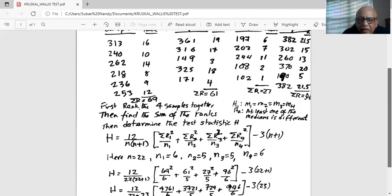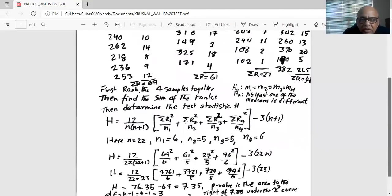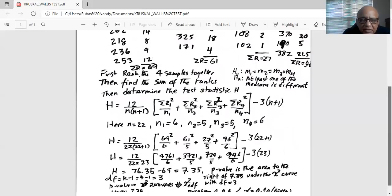H equals 12 divided by n times n plus one, times the sum of: rank one squared divided by n one, plus rank two squared divided by n two, plus rank three squared divided by n three, plus rank four squared divided by n four, minus three times n plus one. Now our total sample size n is 22. N one is 6, n two is 5, n three is 5, and n four is 6.